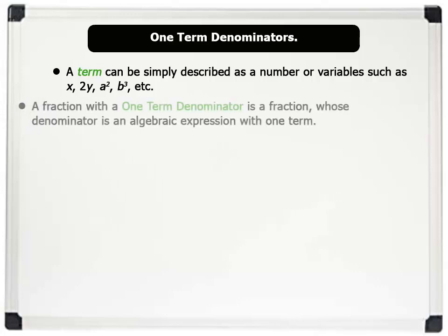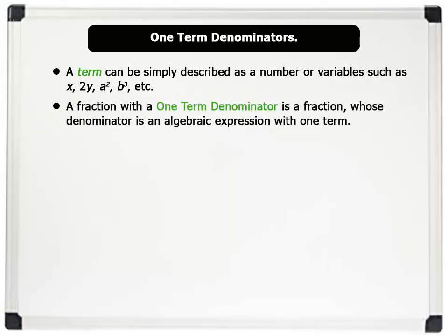A fraction with a one-term denominator is a fraction whose denominator is an algebraic expression with only one term. Examples include 1 over x, 2 over x, 3 over 2x squared, etc.